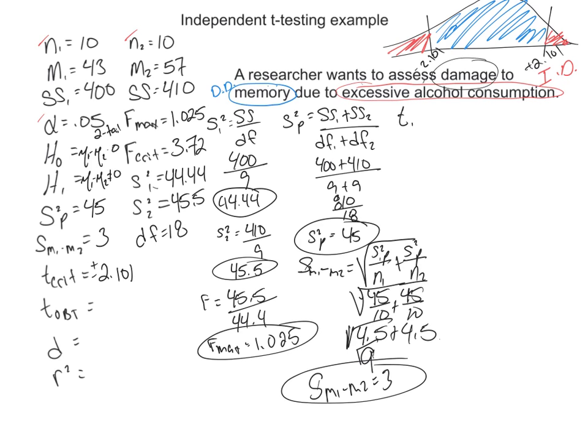Now we can start putting it into our t obtained formula. Keep in mind that t obtained equals mean 1 minus mean 2, minus mu1 minus mu2. Again, that's zero, so most people don't even write it. Divided by this estimated standard error of the mean. Or 43 minus 57. Most people just think of this as zero, so you can leave it all off or not. It's fine either way.